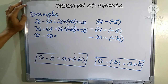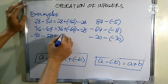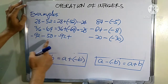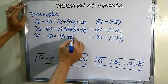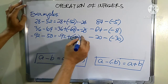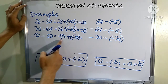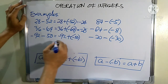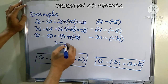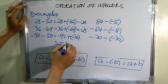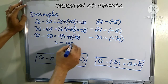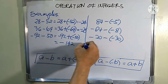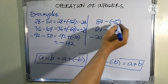Next, we have negative 92 minus 50. We rewrite this as negative 92 plus negative 50. These two numbers are both negative, so we add: the answer is negative 142.